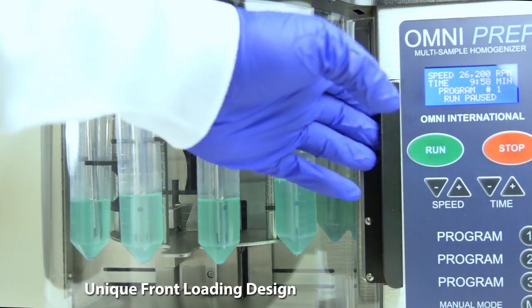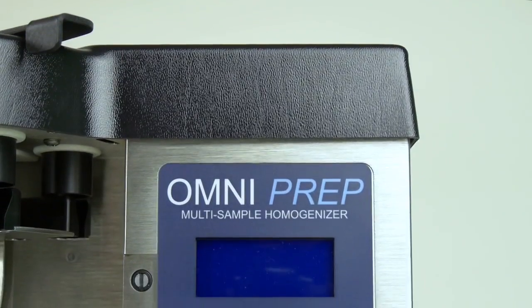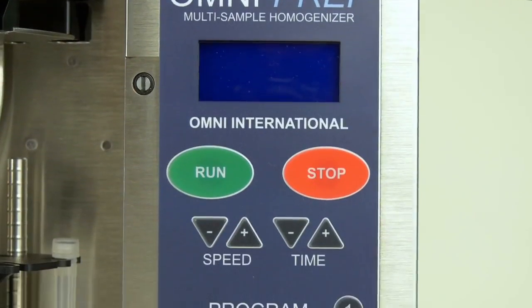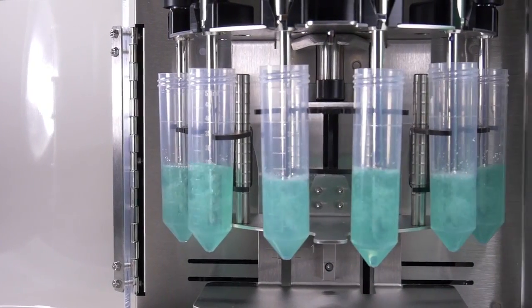The unique front-loading design and easy-to-use controls of the OmniPrep 6 greatly simplifies the process of sample homogenization.